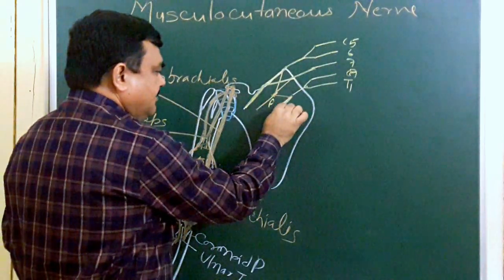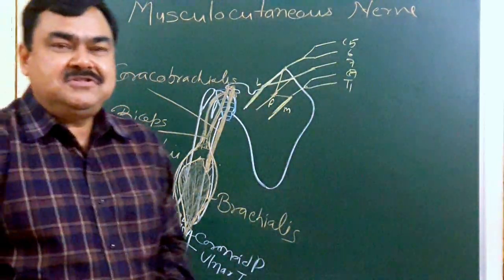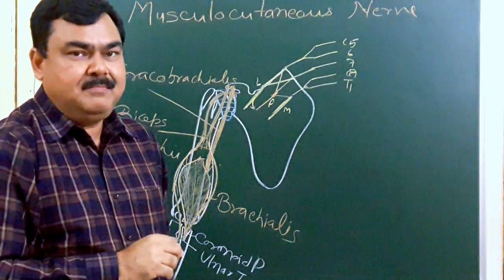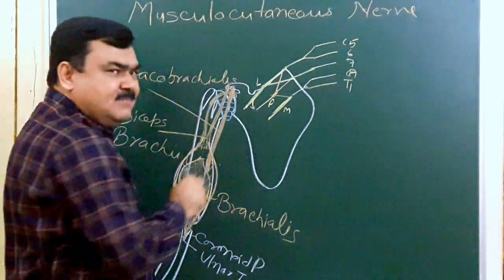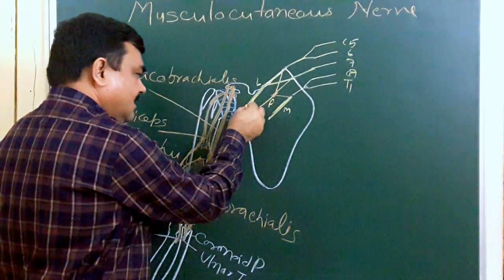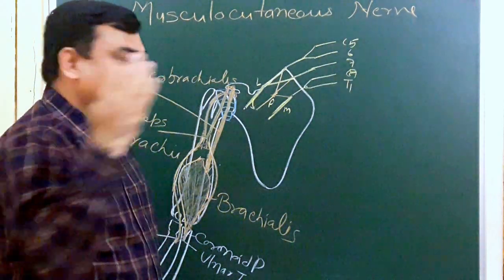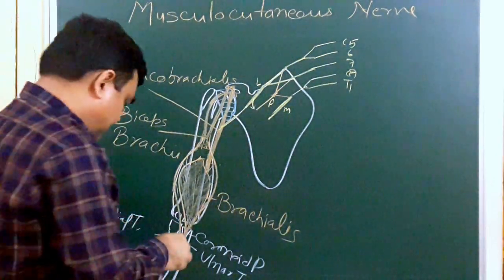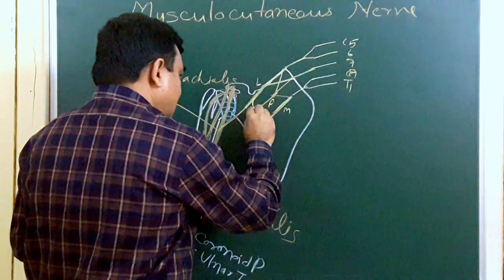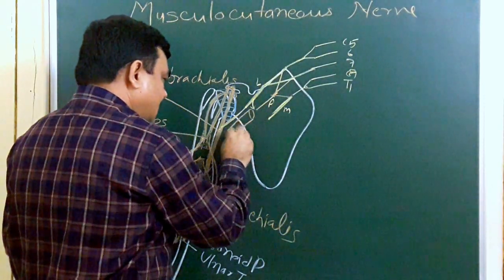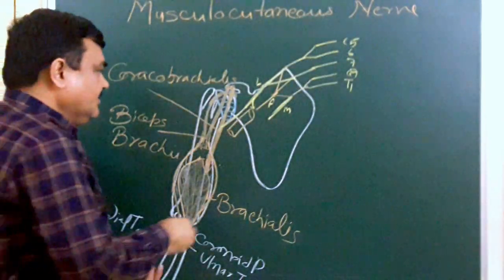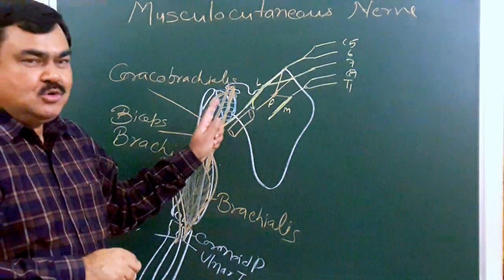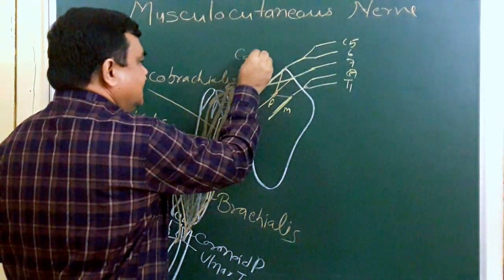The lateral cord gives three branches. One is the lateral pectoral nerve, which supplies pectoralis major. Another branch is the musculocutaneous nerve. The musculocutaneous nerve passes along the third part of the axillary artery. It is a branch of the lateral cord with root values C5, C6, and C7.